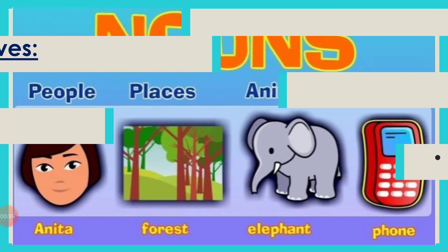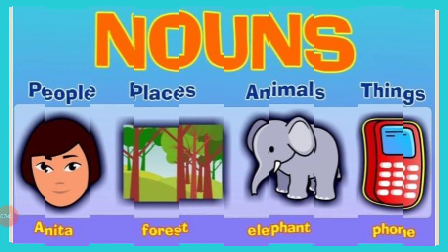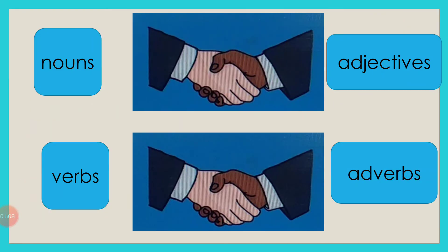All of you know that nouns are the words that we use for people, places, animals or things. We read, speak and write about the nouns. You have also learned the adjectives. Adjectives describe or tell us more detail about the nouns. Here, bright, sparkling, wise, red, colourful, buzzing and slippery are the adjectives that are describing different nouns. All of you know the strong relationship between nouns and adjectives.